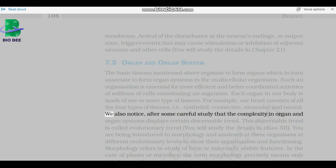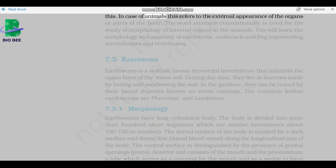We also notice, after some careful study, that the complexity in organ and organ systems displays certain discernible trend. This discernible trend is called evolutionary trend. You are being introduced to morphology and anatomy of three organisms at different evolutionary levels to show their organization and functioning. Morphology refers to study of form or externally visible features. In the case of plants or microbes, the term morphology precisely means only this. In case of animals, this refers to the external appearance of the organs or all parts of the body. The word anatomy conventionally is used for the study of morphology of internal organs in the animals.